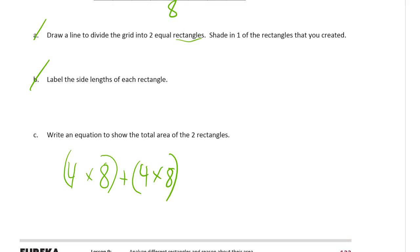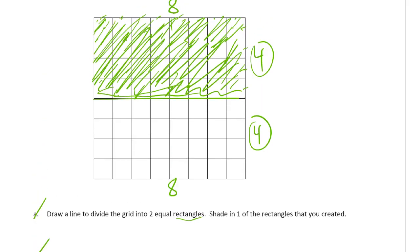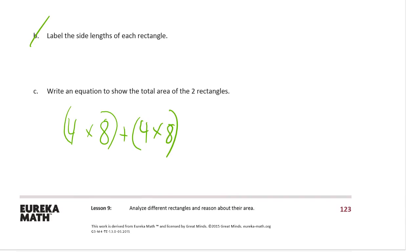Now each one of these is four eights, you could count it, but it's better to know your facts. That's 32, 32 equals 64. There.